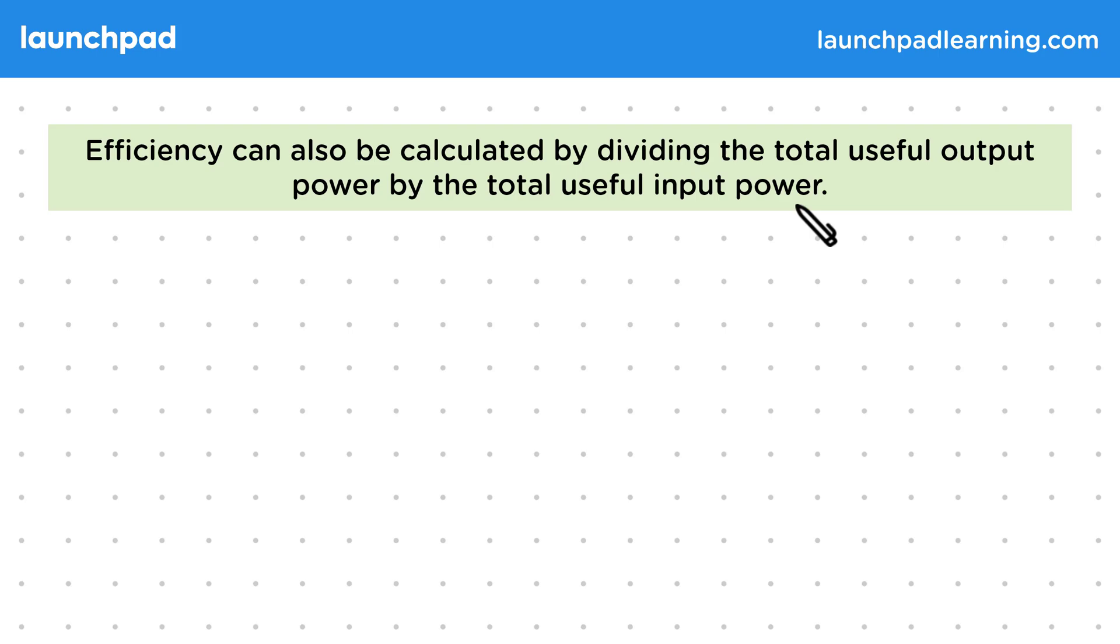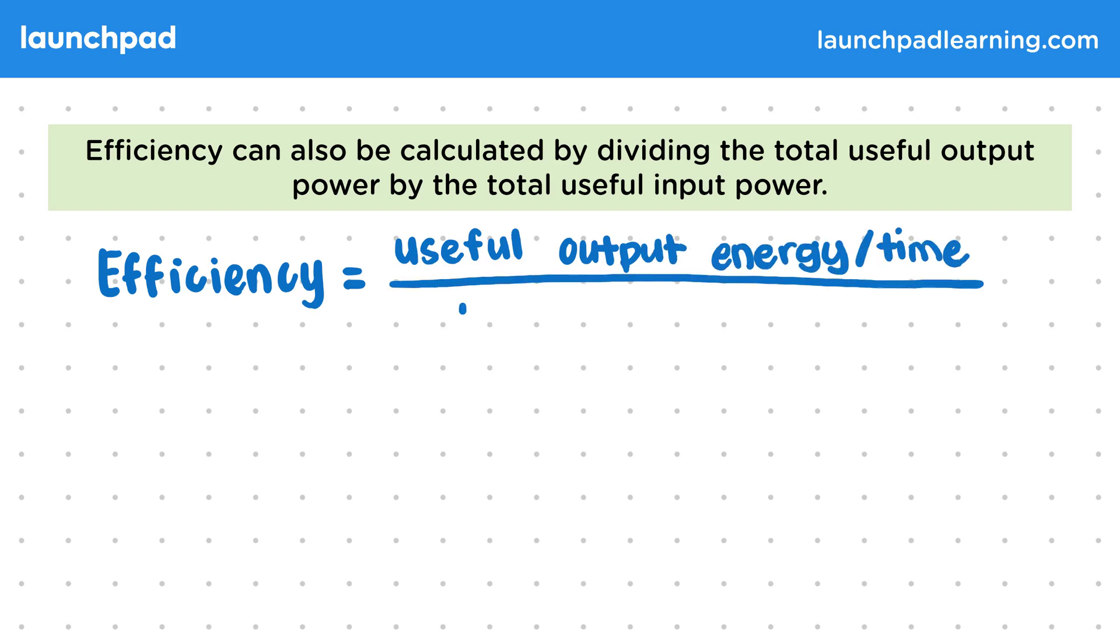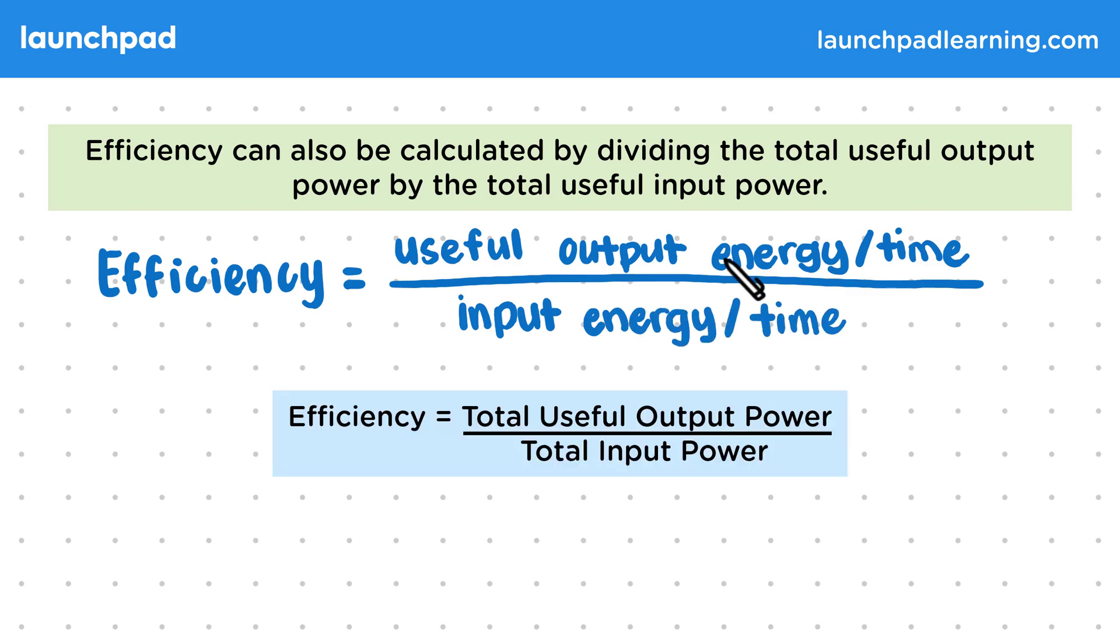We can find the new equation by dividing both the top and the bottom of the efficiency equation by time. That is, efficiency is equal to the useful output power divided by time, all divided by the input energy divided by time. That becomes efficiency is equal to the total useful output power divided by the total input power. Both the useful output and the total input power are measured in watts, so the efficiency again has no units when these are divided by one another, but once again we can give this as a percentage.